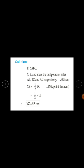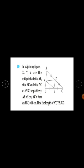Solution: In triangle ABC, X, Y, and Z are the midpoints of sides AB, BC, and AC respectively — this is given. Therefore, XZ is half of BC by the midpoint theorem. X is the midpoint of AB, Y is the midpoint of BC, and Z is the midpoint of AC.